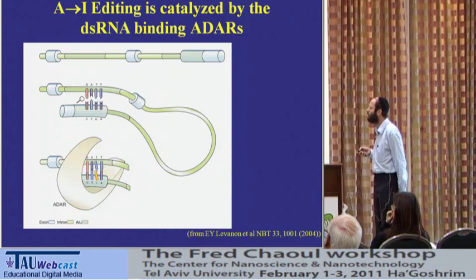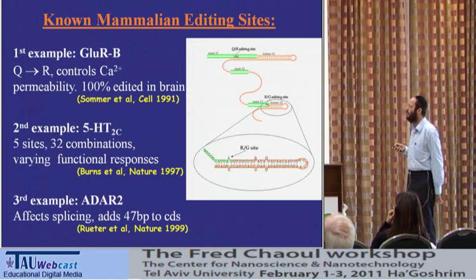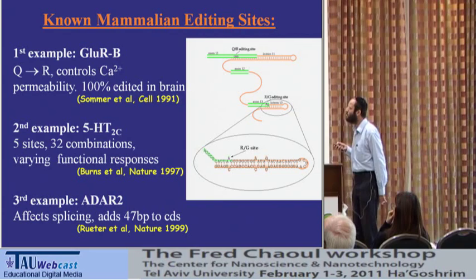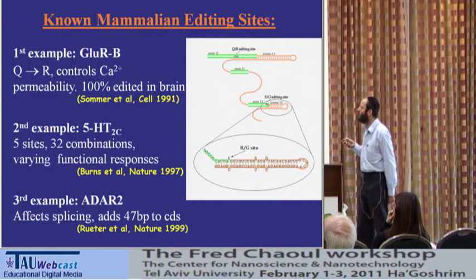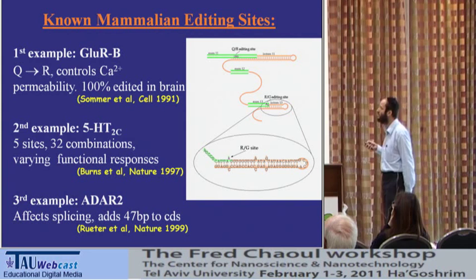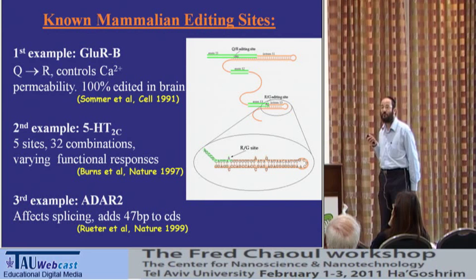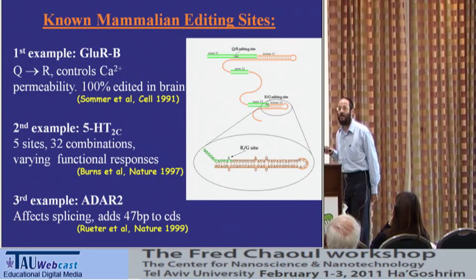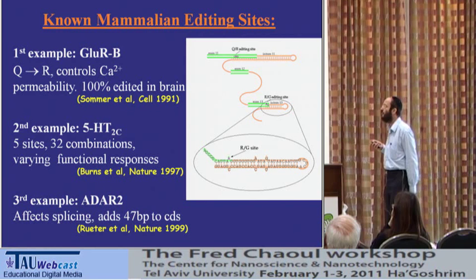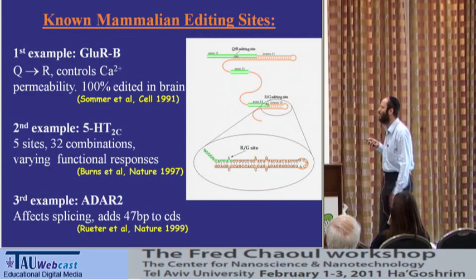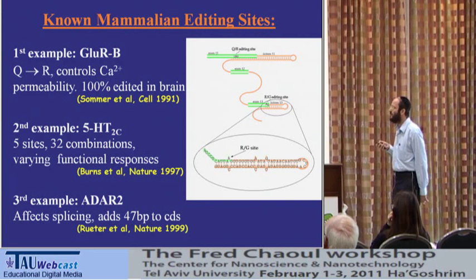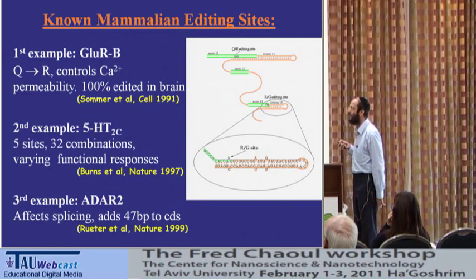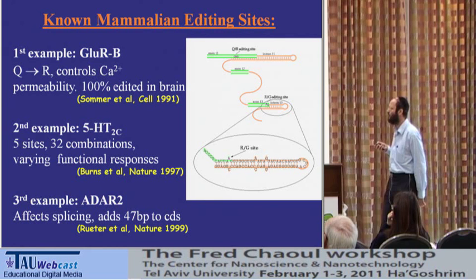The first example in mammals was discovered about 20 years ago: the famous glutamate receptor. In this case, one enzyme comes and changes a single nucleotide within a very long gene. This single nucleotide change results in a single amino acid change in the protein, and this single amino acid change makes the difference between being alive and being dead. If this process does not happen properly, the embryo dies within a few days. In normal conditions, 100% of these transcripts are edited in the brain where they are expressed — a very exact and precise procedure, essential for normal life.